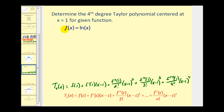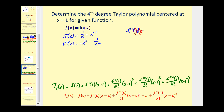Let's determine the first four derivatives of the given function. f prime of x equals one over x, which equals x to the negative one. The second derivative equals negative x to the negative two, or negative one over x squared. The third derivative equals positive two x to the negative three. And the fourth derivative equals negative six x to the negative four, or negative six over x to the fourth.